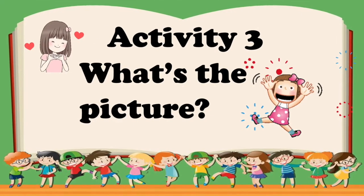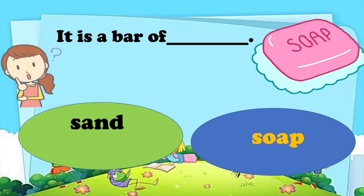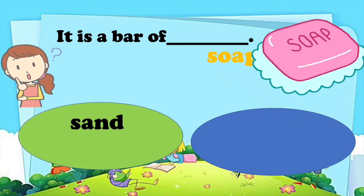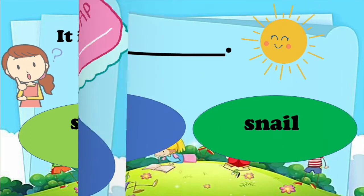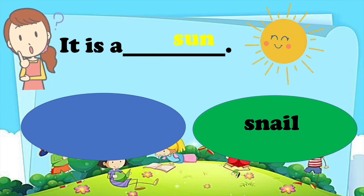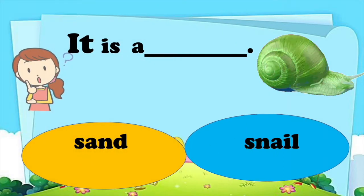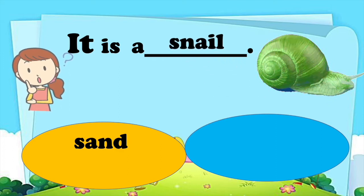All right, let's go to the next activity. What's the picture? Number one — what's this picture? It is a bar of soap. Yes, you are correct. It's a bar of soap. We have the next: it is a sun or a snail. It is a sun. Very good. We have some more. Let's have this picture — it's a picture of a sand or a snail. And you are right, it's snail.